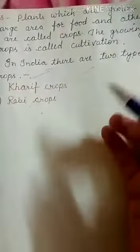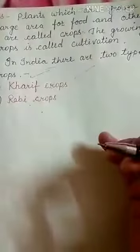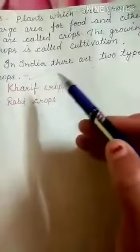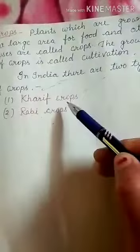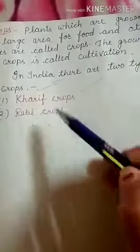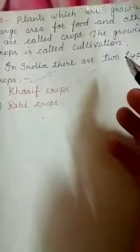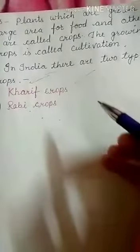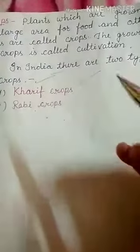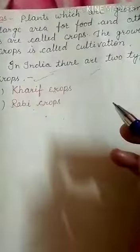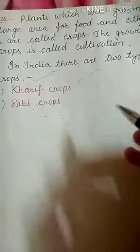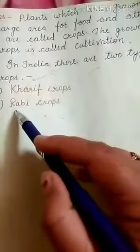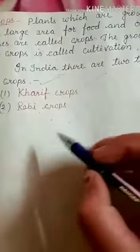Crops are of different types: food crops, fiber crops, and oil-producing crops. In India there are two types of crops. Summer crops are called Kharif crops. Rice, maize, pulses, jowar, bajra, jute, cotton, and peanuts are grown in summer and harvested at the end of the monsoon.